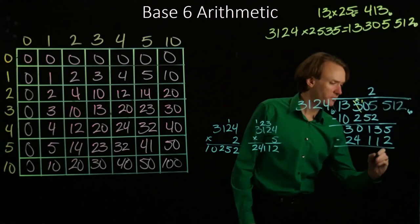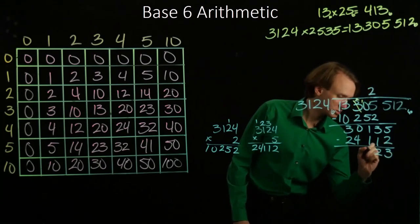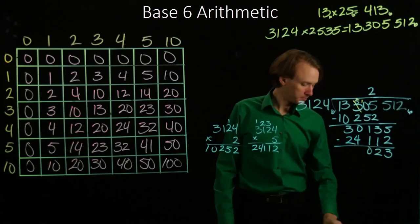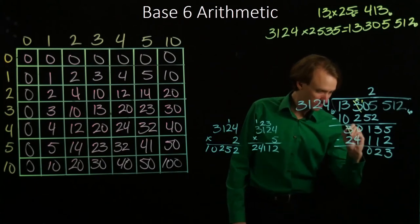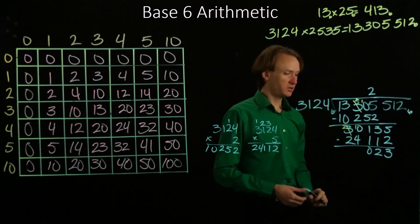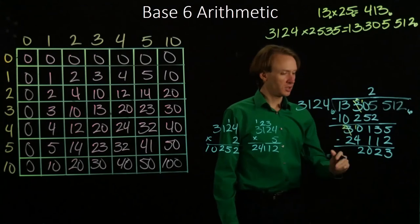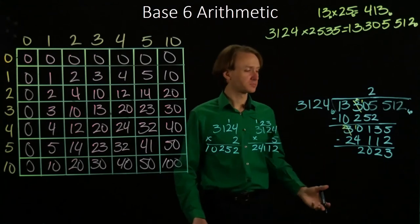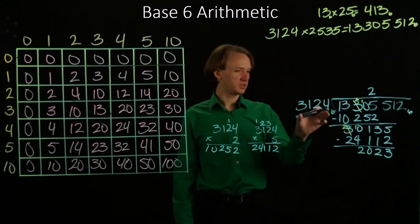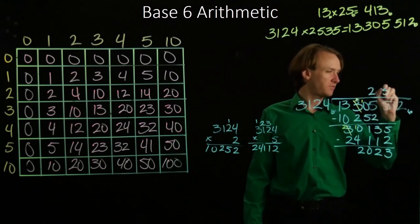So 5 minus 2 is 3. 3 minus 1 is 2. 0 will be a 2. It will be a 2. And I'll have a 10. So 10 minus 4 is 2. And 2 minus 2 is 0. So 2023 is less than 3124. And I multiplied by 5.